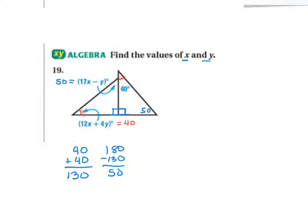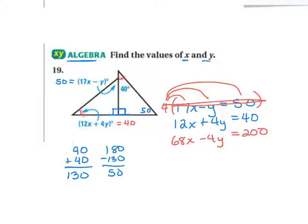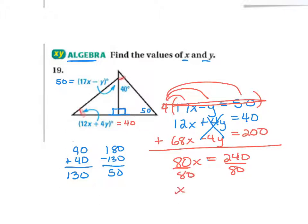Now to find the values of x and y — this is an algebra question, so we're reviewing our algebra skills. I'm going to write each equation to the side and solve the system of equations using elimination. I'm going to eliminate the variable y by multiplying one equation by 4. Once I distribute 4 to each term, I end up with 68x minus 4y equals 200. Adding the two equations together, I get 80x, the y cancels out, and 40 plus 200 is 240. Dividing by 80, x equals 3.